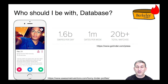Another thing databases can be used for is to figure out who should I be with. This is the Tinder app, of course. Databases are important for the happiness and the promulgation of the human race. Tinder provides some basic statistics about the use of their service: 1.6 billion swipes per day are handled, that's a lot of data being inserted into their database.